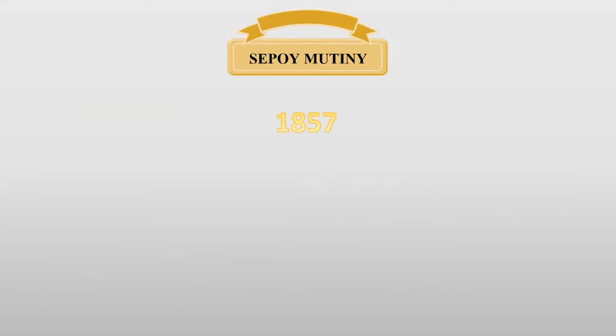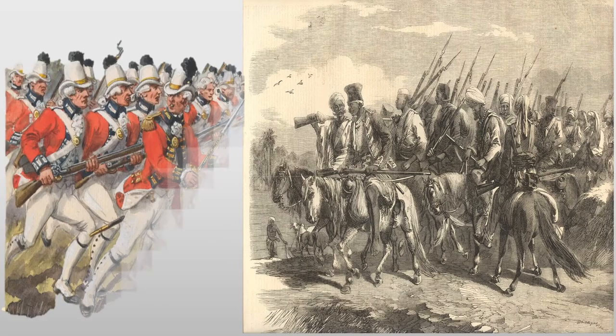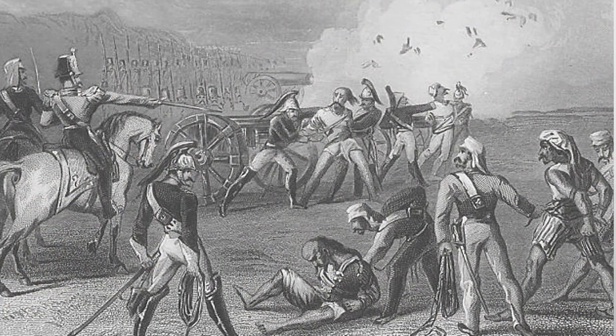This frightened the British and resulted in the Sepoy Mutiny of 1857, also called the First War of Independence, where Indians turned against the British for punishing the people cruelly.